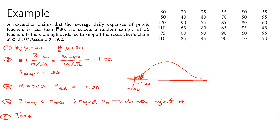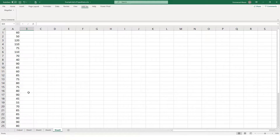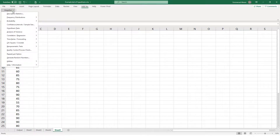Since we do not reject the alternative hypothesis, there is statistical evidence to support the claim of the researcher — that the average daily expenses of public school teachers is less than 80 pesos. That's how we do it with manual computation. Now let's try using MegaStat. We go to Add-ins, MegaStat, Hypothesis Test, then Mean versus Hypothesized Value.